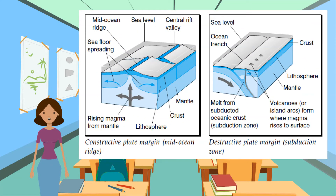Convectional activity causes the plates to move. The edges of plates are called plate margins. There are three types of plate margins. At a destructive boundary the plates move together, but at a constructive boundary the plates move apart. At a conservative boundary the plates move side by side. At a constructive boundary, molten rock or magma rises to the surface forming new crust, forcing the existing crust apart and causing seafloor spreading. This causes continental drift.